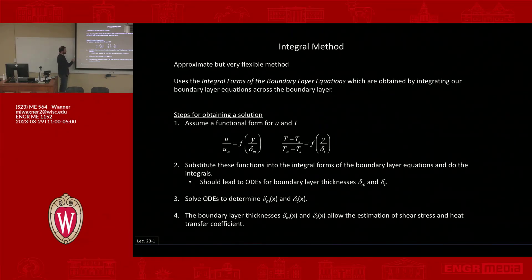So first we assume a functional form for velocity and or for temperature. So think about what I said. We are assuming an equation that tells us velocity or temperature as a function of position y.